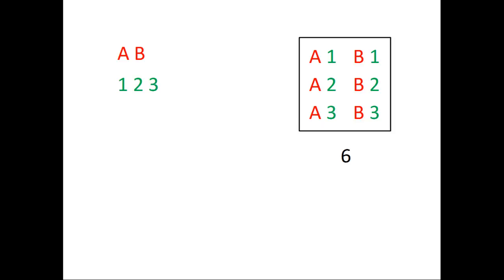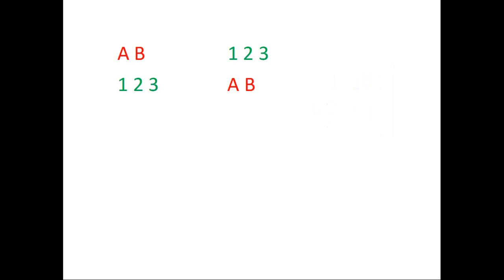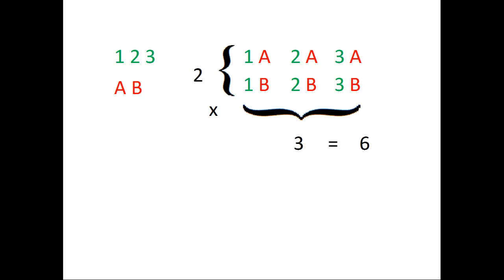Now what if we had actually chosen the numbers first, and then the letters? Well, we could have 1A, 1B, 2A, 2B, or 3A, or 3B. So we still have six possibilities.